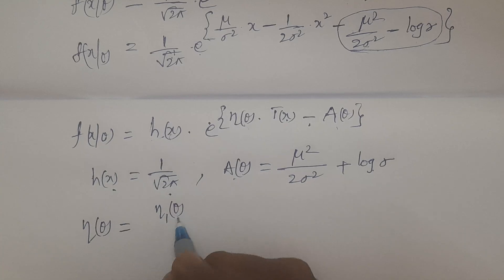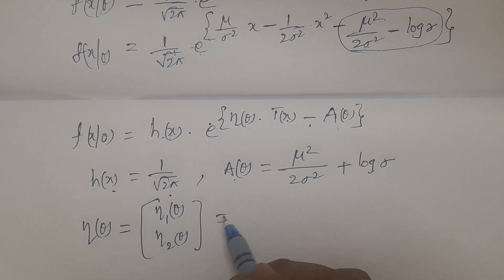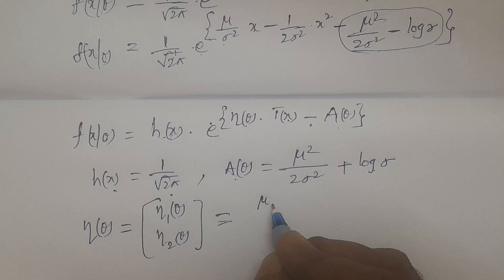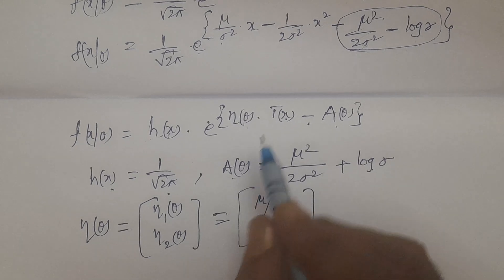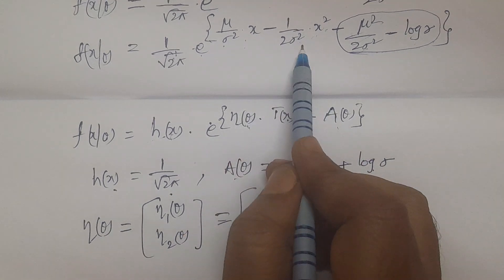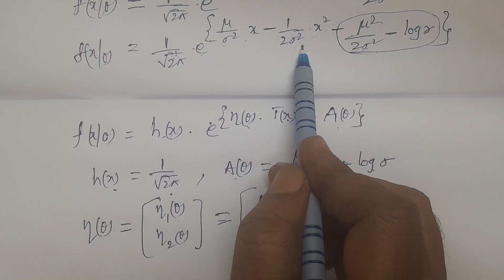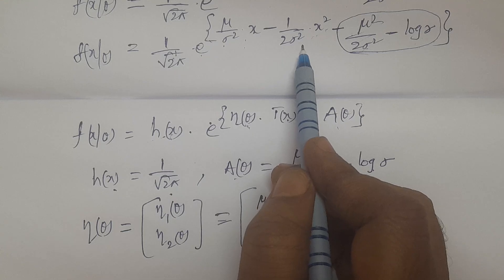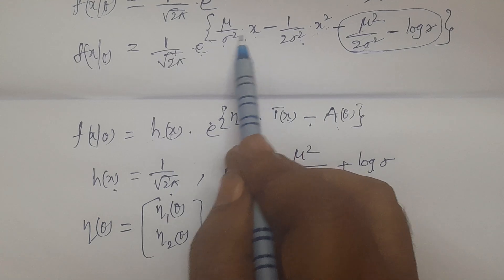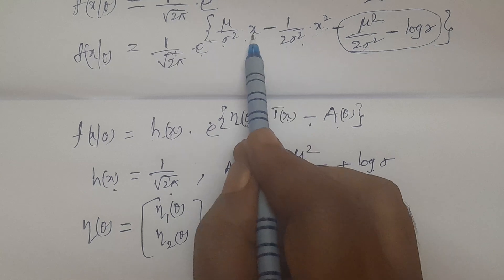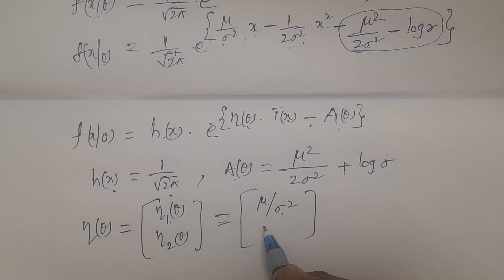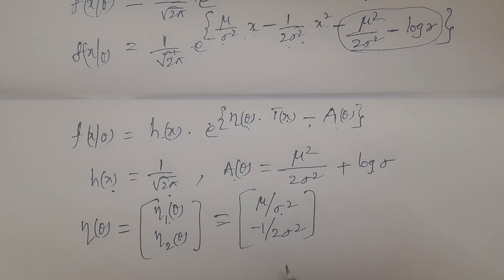For the term in x, η₁(θ) = μ/σ². For the term in x², η₂(θ) = −1/(2σ²). These two natural parameter functions correspond to the two parameters μ and σ². To estimate both parameters, we need to specify two particular sufficient statistics — one for μ and one for σ², separating x multiplied by η₁ and x² multiplied by η₂.